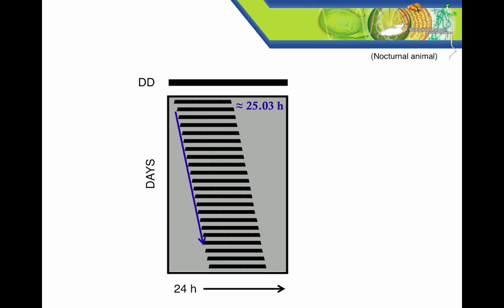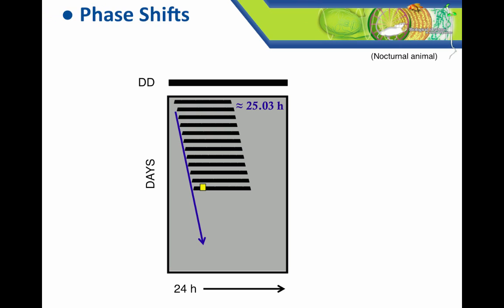Let's try something else. What if, instead of allowing it to continue to free-run, we gave the organism a pulse of light early in subjective night? Well, as you saw in video 1, we get what's called a phase shift. A phase shift is a change in the relative positioning of the recurrent rhythm, such as the position of the onset of activity, that occurs under the influence of some acute stimulus, such as this pulse of light.